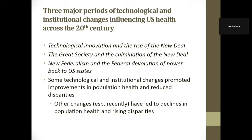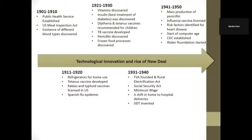Then we had this Great Society and the culmination of the New Deal. This is where inequality was low and health disparities were extremely low. Then we have this other new period we've paid the least attention to, which is new federalism and the federal devolution of power back to the states. Federalism is a real issue here. Some technological and institutional changes promote improvements; some do not — in fact, some have the opposite effects.